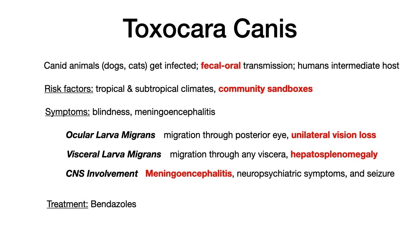Toxocara canis has the word 'canis' in the name because canid animals like dogs and cats are the ones that get infected. There is fecal-oral transmission, and humans are the intermediate host. Risk factors include tropical and subtropical climates. Something important to think about are community sandboxes — canine animals tend to poop in soil around sandboxes, so children who contact infected sandboxes are at higher risk. If you see 'sandbox' in the vignette, think Toxocara canis.